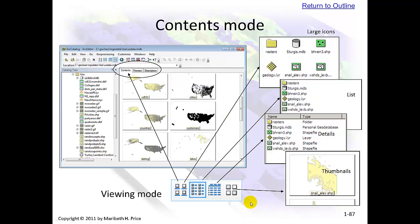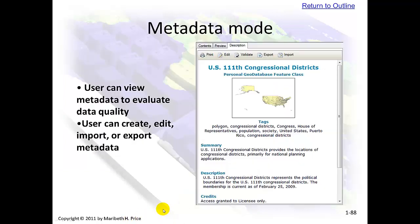In ArcCatalog Metadata mode you can view the metadata to evaluate the data quality, but many of these fields will say 'required' underneath them and be blank.